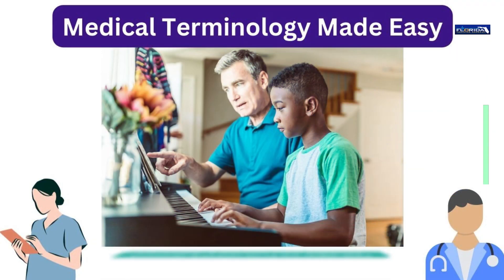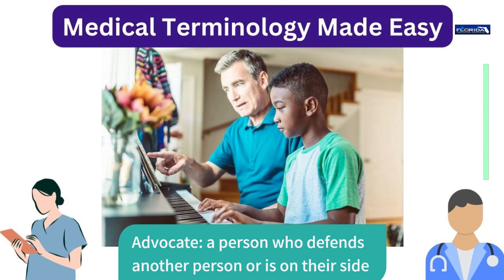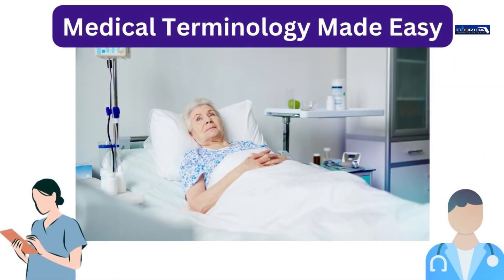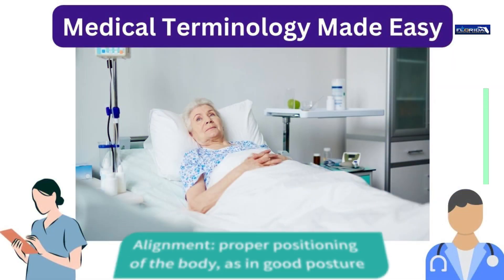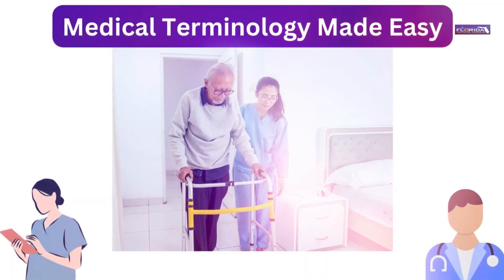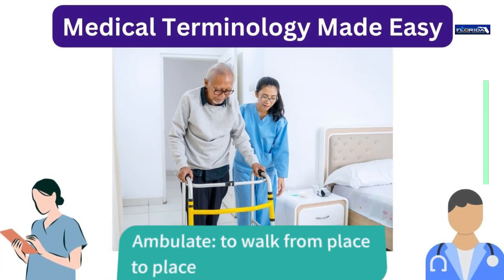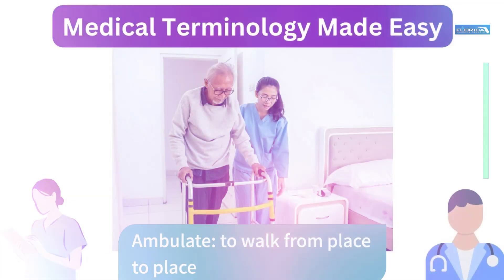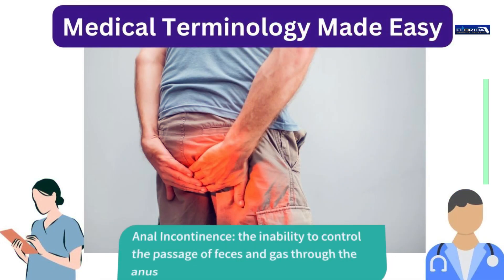Advocate: a person who defends another person or is on their side. Alignment: proper positioning of the body, as in good posture. Ambulate: to walk from place to place. Anal incontinence: the inability to control the passage of feces and gas through the anus.